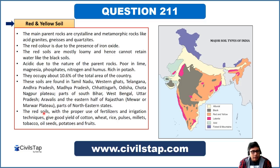With the proper use of fertilizers and irrigation techniques, red soils give good yields of cotton, wheat, rice, pulses, millets, tobacco, oil seeds, potatoes, and fruits. So these soils are not very poor from an agriculture standpoint if proper fertilizers and irrigation facilities are available.